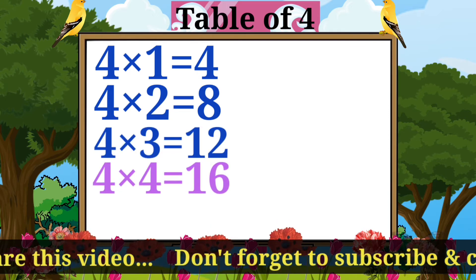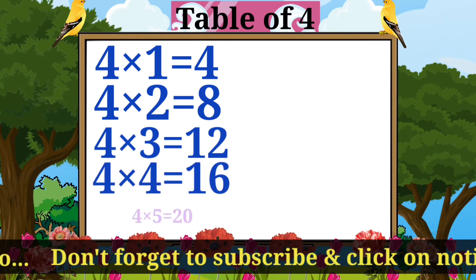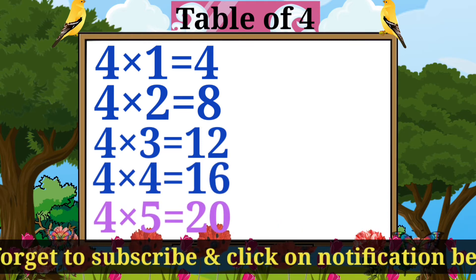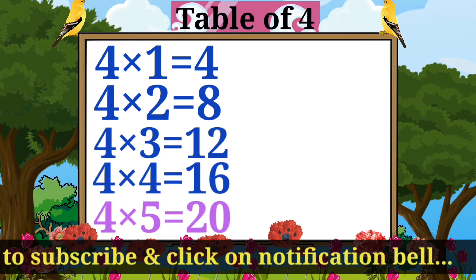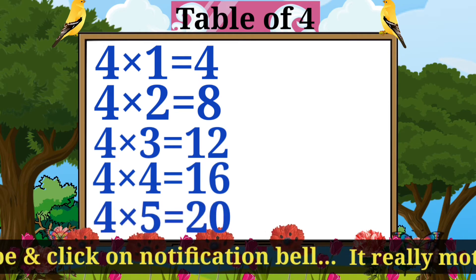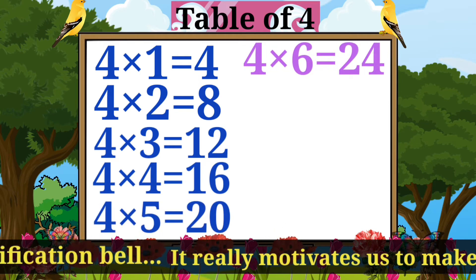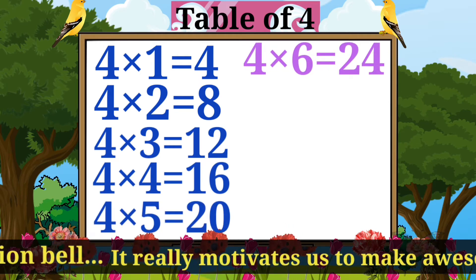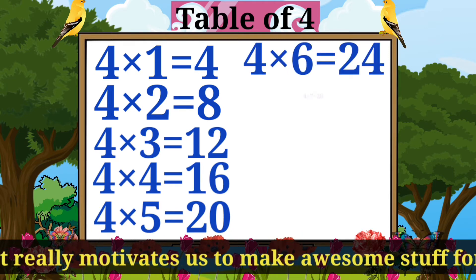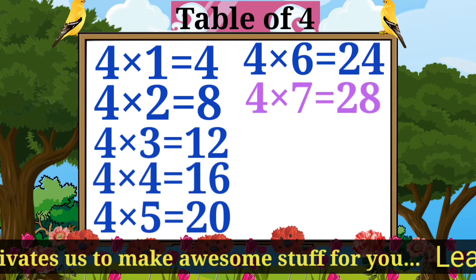Four fours are sixteen. Four fives are twenty. Four sixes are twenty-four. Four sevens are twenty-eight.